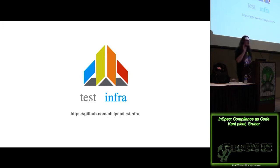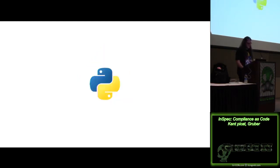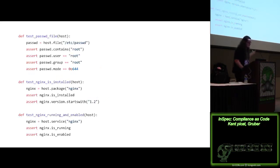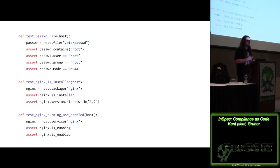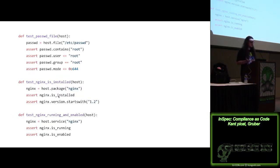Maybe you hear the Ruby thing and you think 'I like Python' — that's okay. The test-infra project is very interesting; it's directly inspired from server spec — on GitHub it says 'a server spec alternative written in Python.' With test-infra you use literally the pytest framework and test things like the password file or nginx config. The thing I don't like is it's not as nice if you're not a code person. An auditor could very easily read 'something should not be installed' in InSpec. With test-infra the logic hasn't been stripped away — it's very raw and code-like. Sadly it's not as up to date as InSpec backed by a company like Chef.